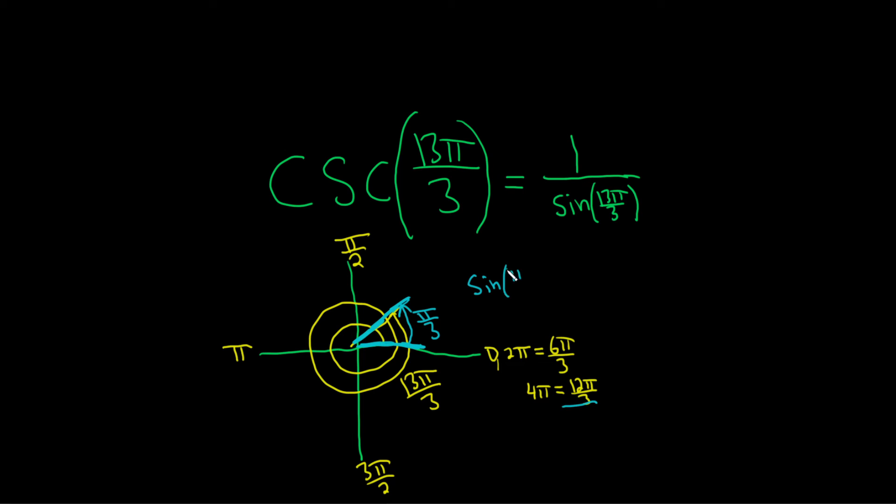The sine of π over 3 is equal to the square root of 3 over 2. Therefore, the sine of 13π over 3 is also that, because here sine is positive. Because sine is the y-coordinate on the unit circle.